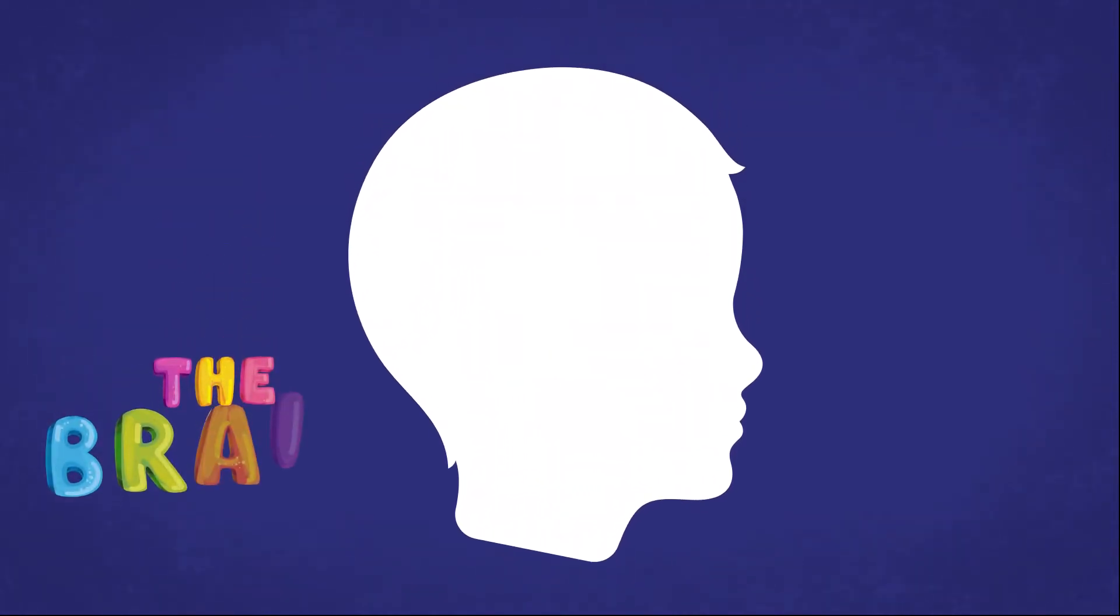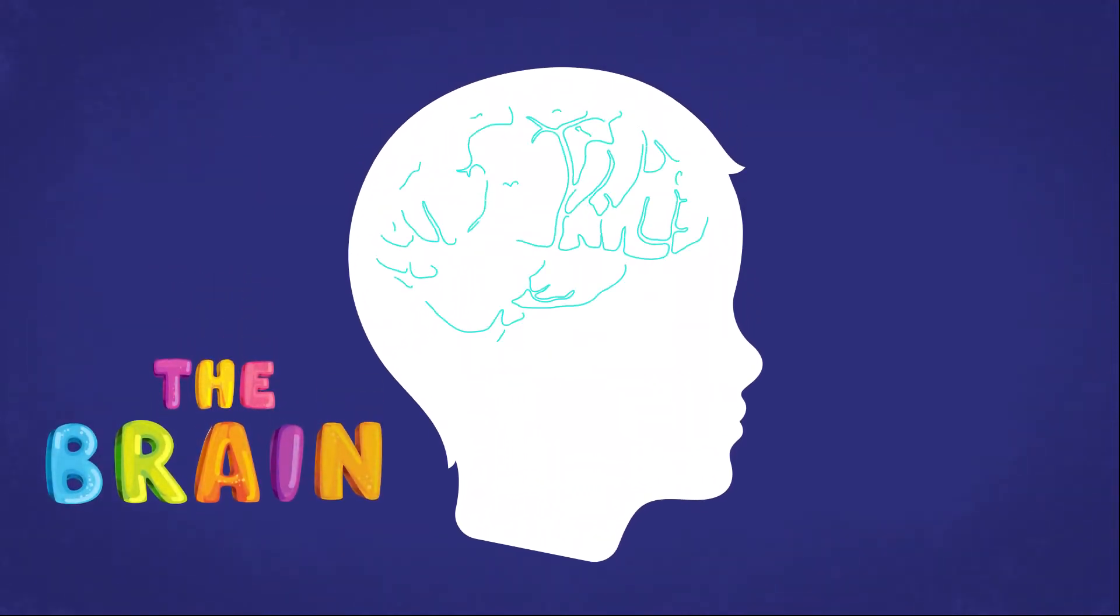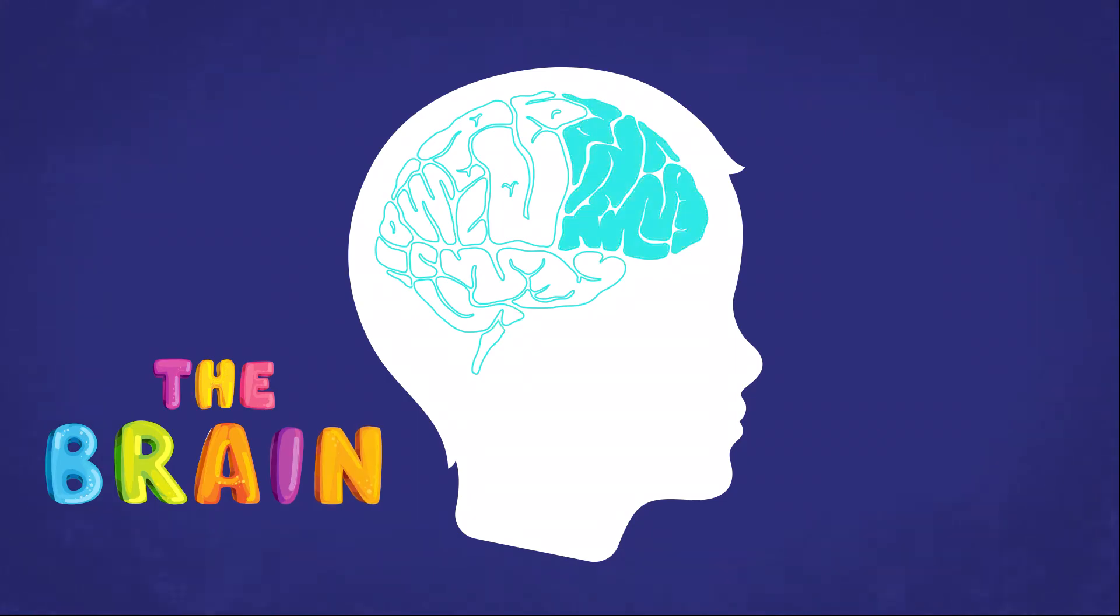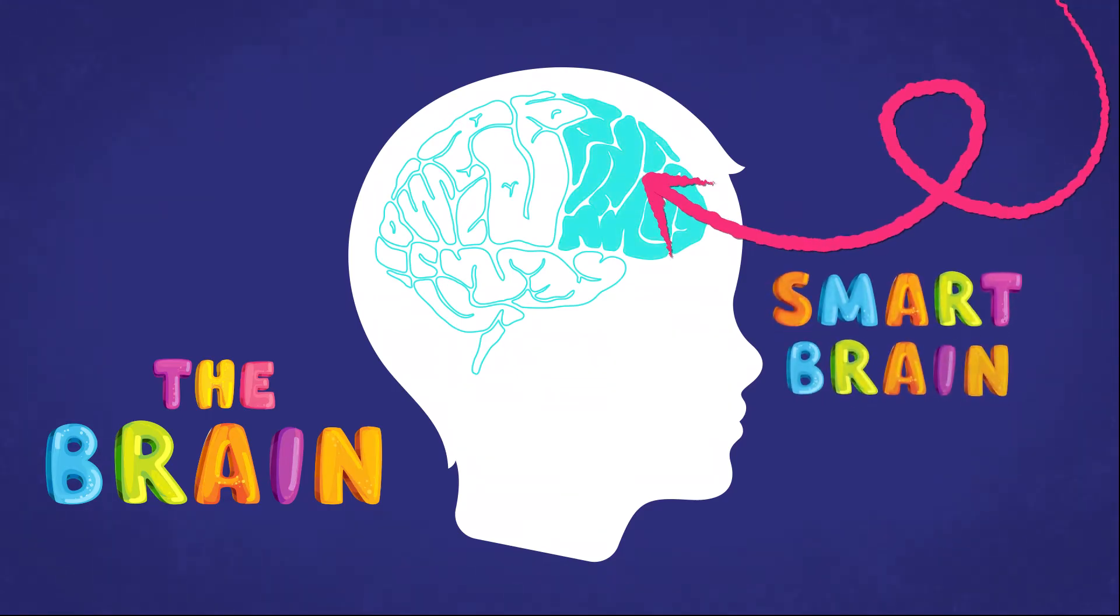The brain can be tough to understand, so let's break it down into three main parts that help guide our emotions. The first part of our brain is our smart brain, also known as our frontal lobe.